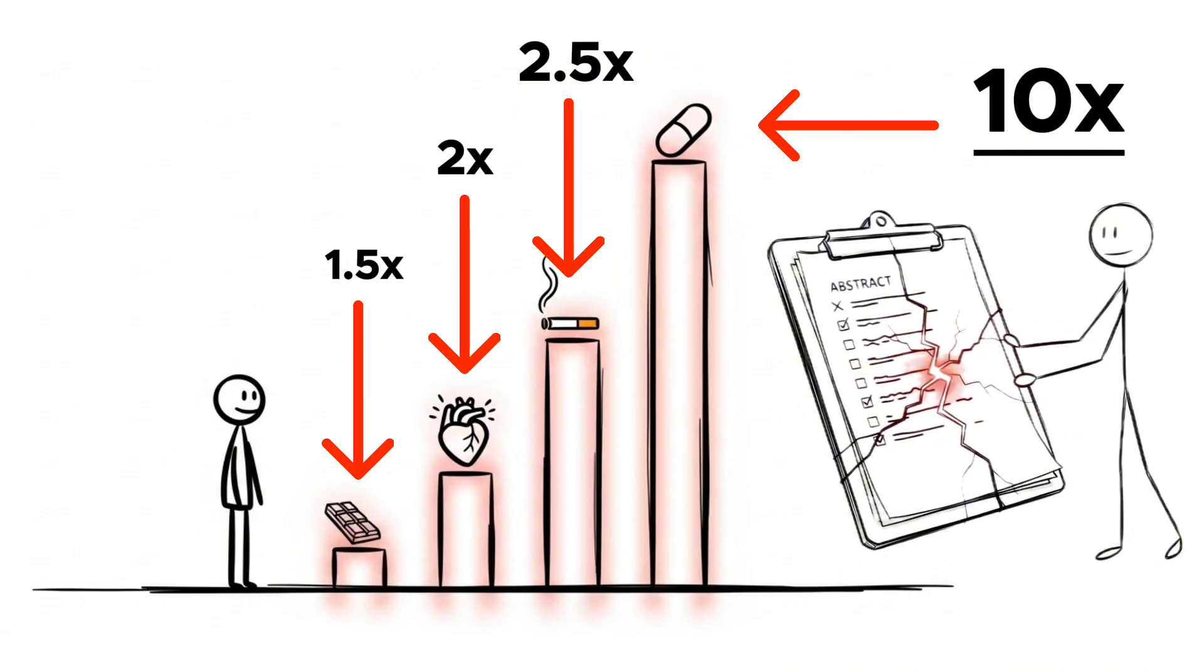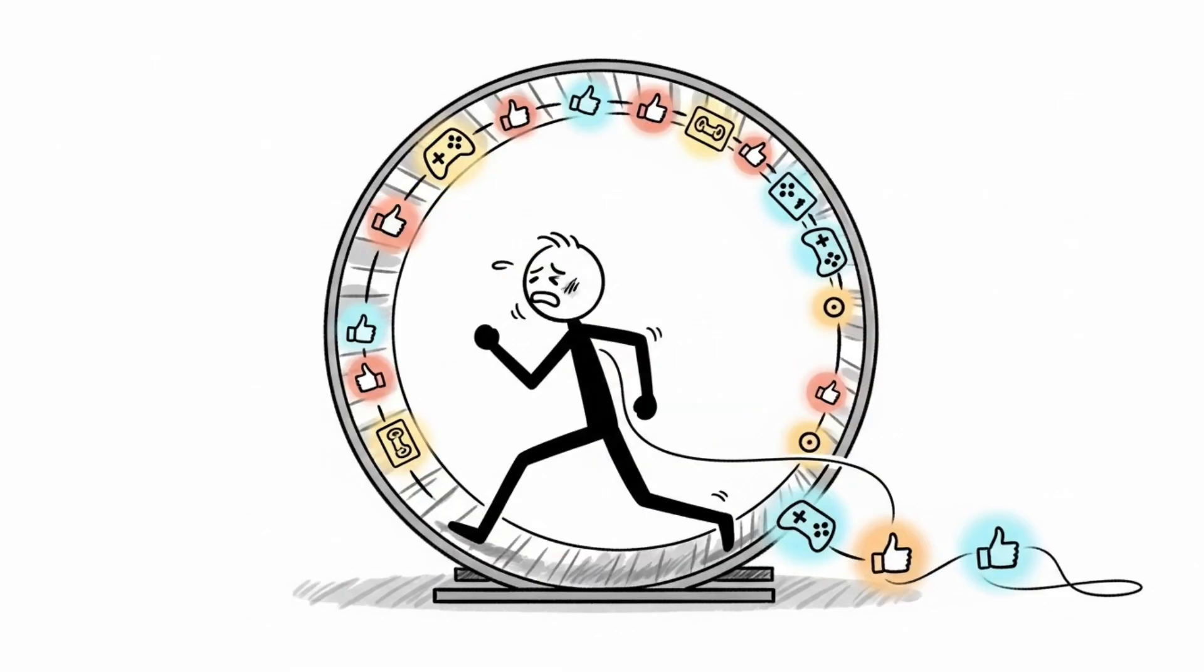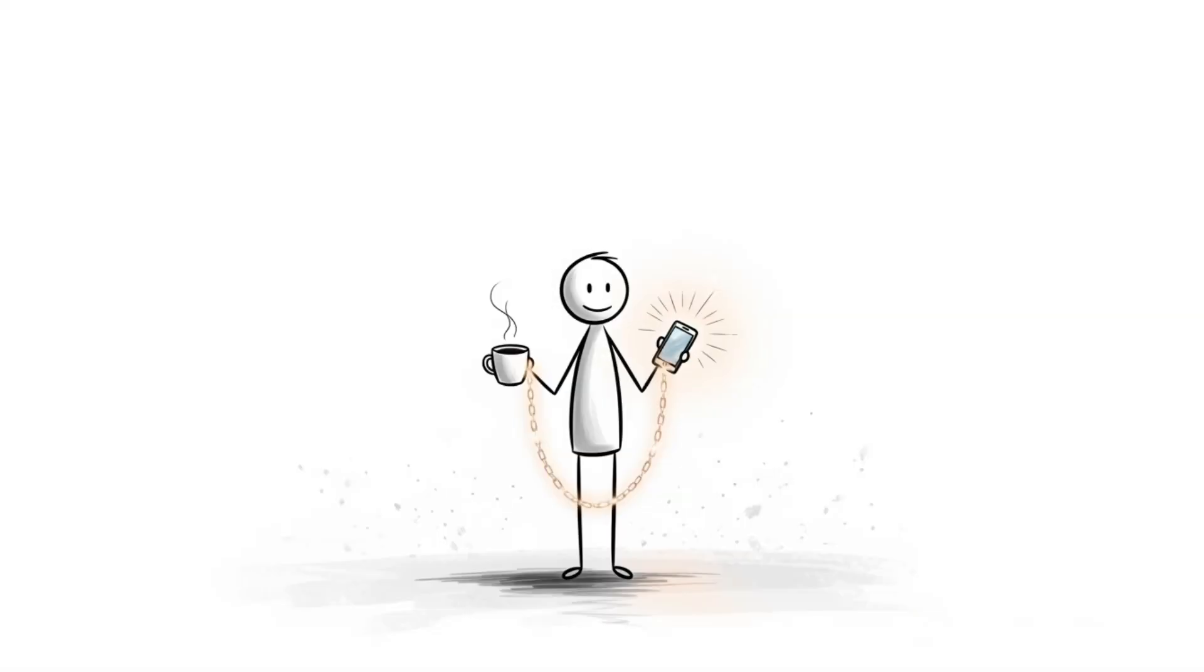These data points are not just facts, they are a direct window into the power and danger of these substances. The consequence of these massive spikes is the rapid depletion of your brain's readily releasable dopamine pool. This is why the pursuit of high dopamine activities leads to a perpetual cycle of needing more and more just to feel less and less. It's the core mechanism of addiction subtly at play in even our most benign habits.